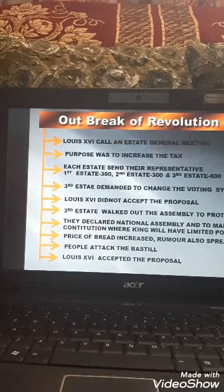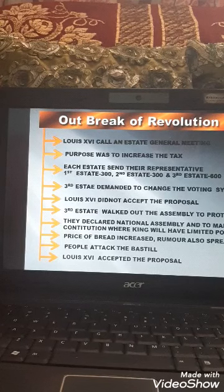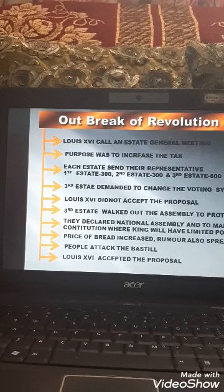The third estate representatives were more prosperous and educated. But in the general meeting, peasants, artisans, and women were not allowed to enter the assembly. The 600 representatives who went to attend the meeting carried with them 40,000 letters in which the peasants, artisans, and women had enlisted their problems and demands.